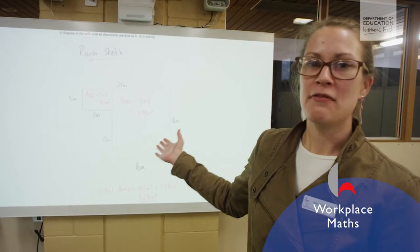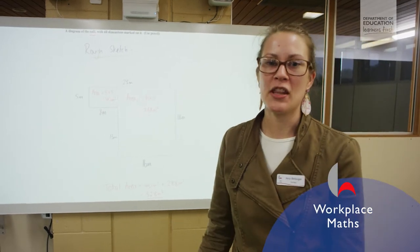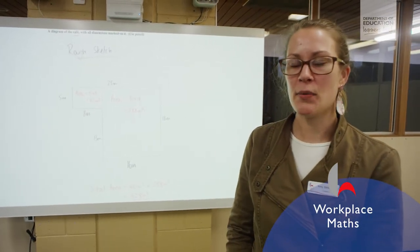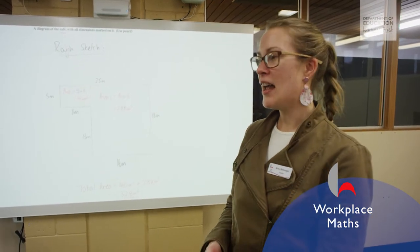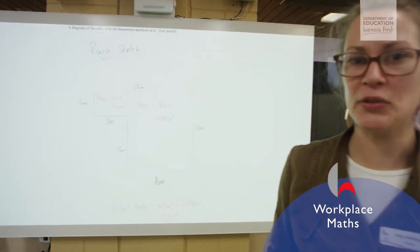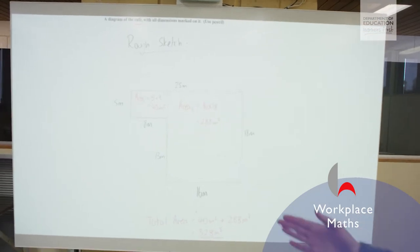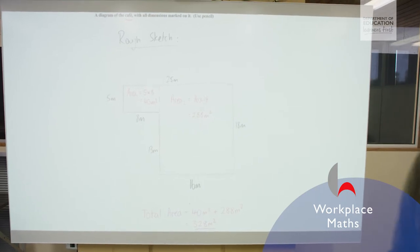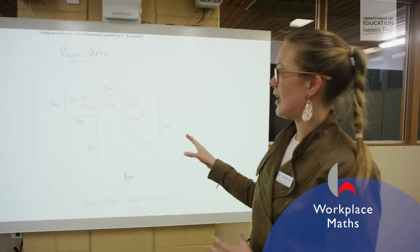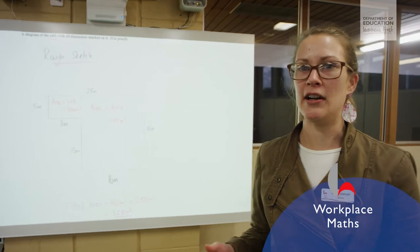So this is an example we have for workplace maths. One of the units is measurement so we look at some basic shapes, the area and perimeter of them, and then we use that knowledge to do a practical investigation. Here we went and measured out the cafeteria. The students took down their measurements and then they created a scale diagram to find the total area of the caf.